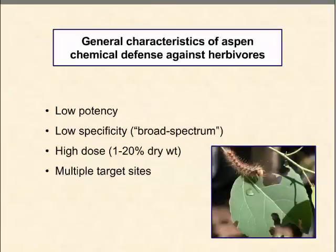A couple of general characteristics of these defense compounds: they have relatively low potency — they're not highly toxic — but they exist at fairly high concentrations, from anywhere from 1 up to 20–25 percent of the dry weight of a leaf. They have low specificity, or in other words they are broad spectrum — they attack a number of different target sites and have been shown to be active against herbivores, fungal organisms, birds, mammals, and insects.